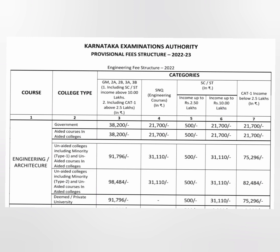For income up to 10 lakhs, the SCST fee that was 21,700 in government or aided colleges has become 31,110 in private colleges. For Category 1 students, fees are much higher in private colleges — type 1 is 75,000 and type 2 is 82,000. These are lower than the GM/2A/2B/3A/3B category fees, but Category 1 fees for income below 2.5 lakhs are still significantly higher in type 1 and type 2 private institutes.